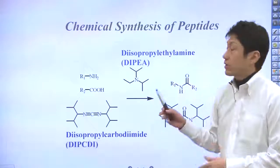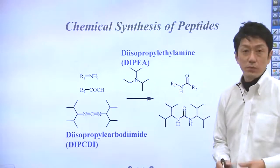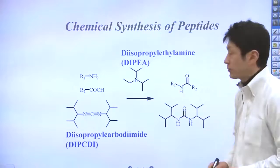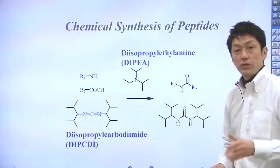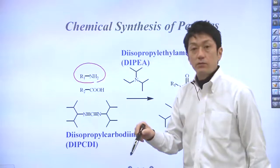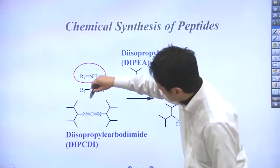This slide shows a typical chemical reaction that people usually use to form a peptide bond. You have an amine here and carboxylic acid right here.